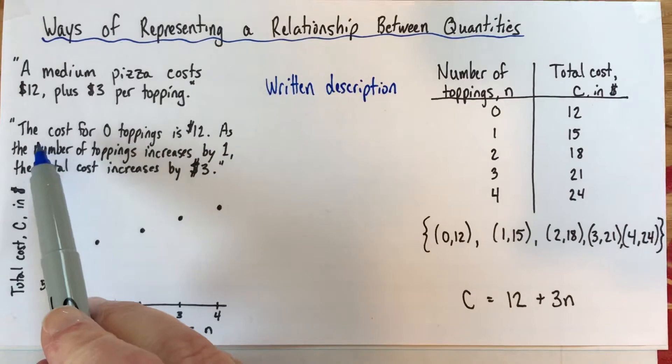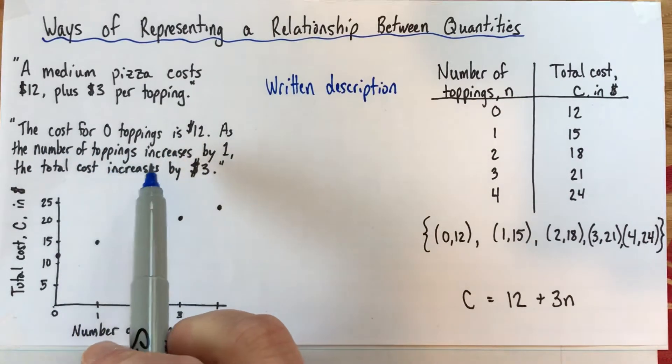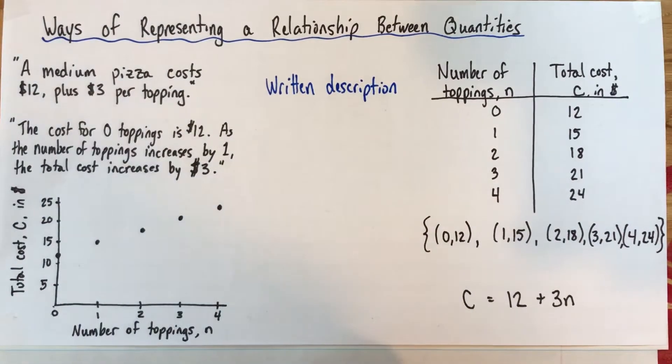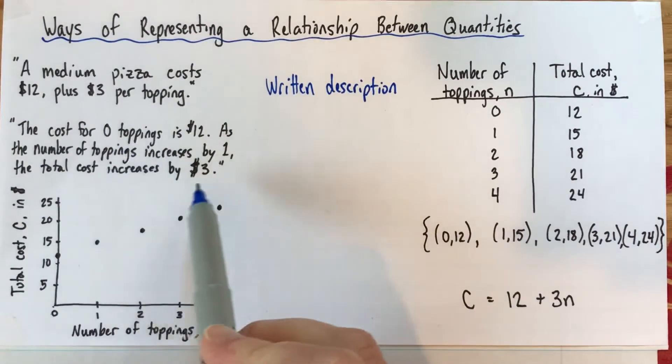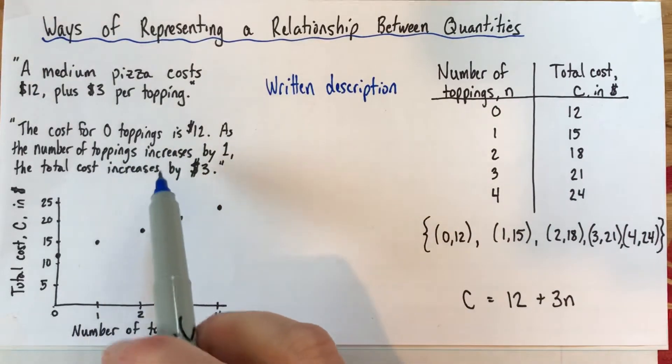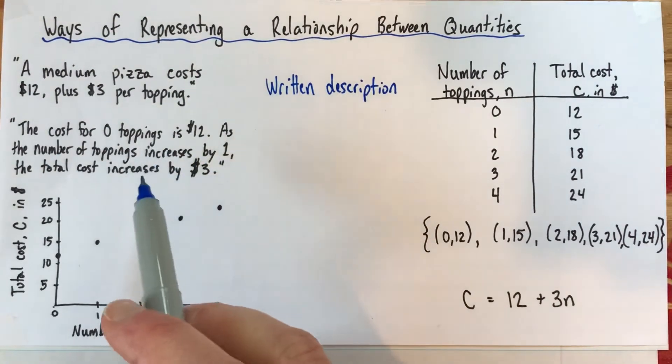So here's another written description that cost for zero toppings is $12. As the number of toppings increases by one, the total cost increases by three. So this really sort of emphasizes how the quantities change together. So if you get more toppings, your total cost is increasing. I think that's the emphasis of this one.